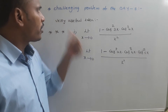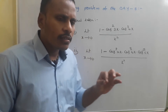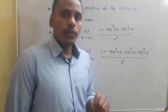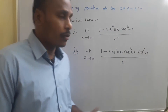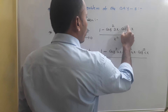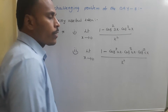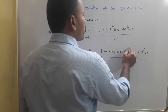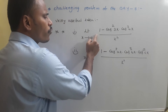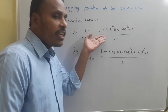These two questions are not only challenging but also very useful conceptual ideas. Using these two, we are able to answer many similar questions. The first one is: limit as x tends to zero of (1 - cos²(3x)·cos³(4x)) / x². The second one is: limit as x tends to zero of (1 - cos^p(ax)·cos^q(bx)·cos^r(cx)) / x². The second one is just a generalization of the first.